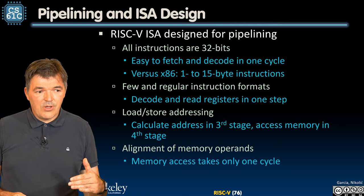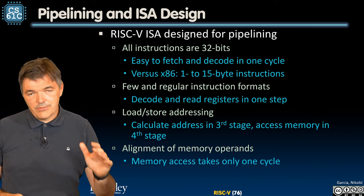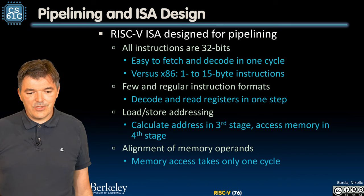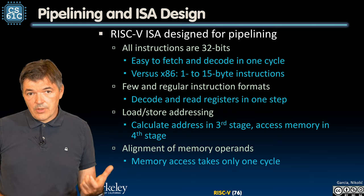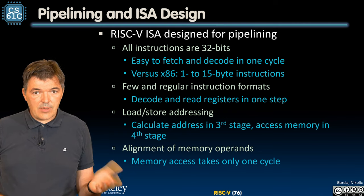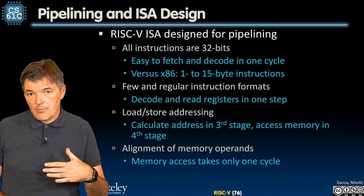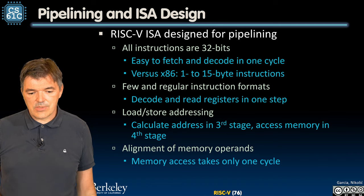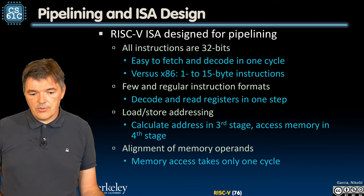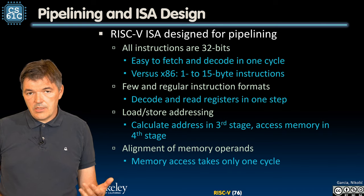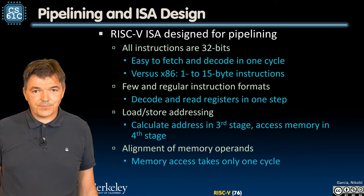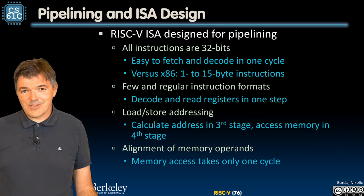With x86, you have to keep fetching more bytes — after 15 bytes, the most complex instructions can finally be decoded. RISC-V has a small number — six different instruction formats — that are very easy to decode and read registers in one step, so in one stage we can do both. Many more complex ISAs require multiple steps for that. Load store addressing can be done in the third stage using the ALU, and memory is accessed in the fourth stage. Memory operands are all aligned and take only one cycle, which is very convenient. We have taken advantage of all of this when designing our pipeline.